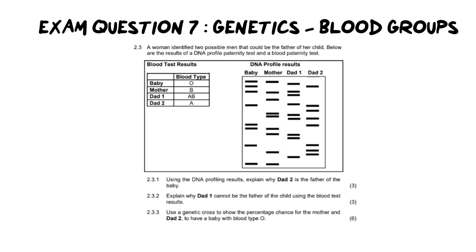So at the beginning here, it says a woman identified two possible men that could be the father of her child. Below are the DNA results of a DNA profile paternity test and a blood paternity test. Now, just a quick extra piece of information that's really important is that you cannot confirm if a father is the father based off of his blood group. You can just exclude fathers. And the reason for that is there are plenty of men who have the same blood group. So there are lots of men who are blood group A and blood group B. That doesn't mean that's their child. However, there are certain possible blood group outcomes that are not possible if you are not that blood group.